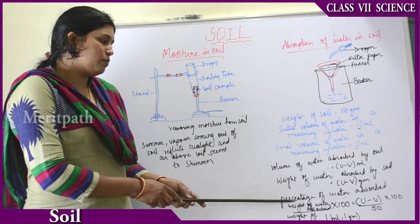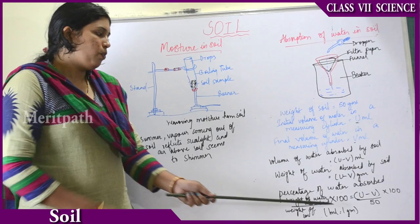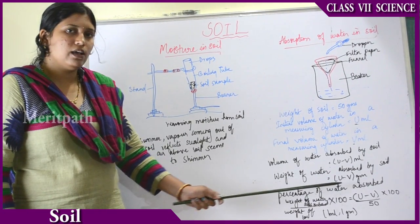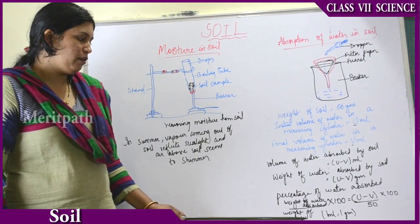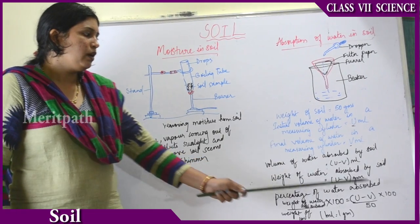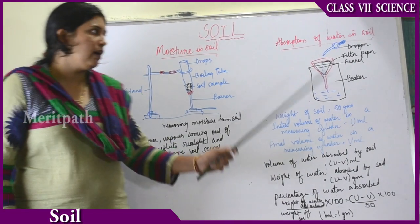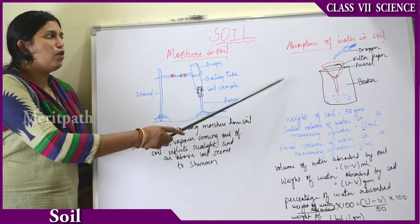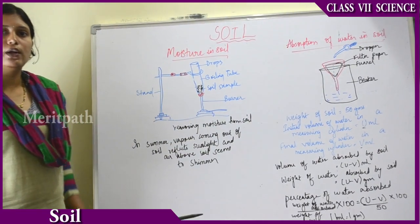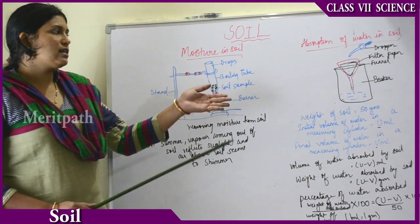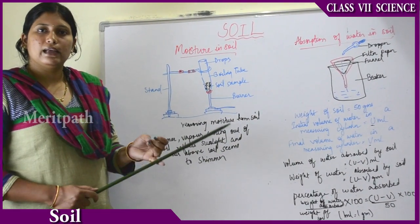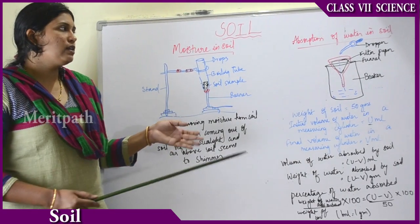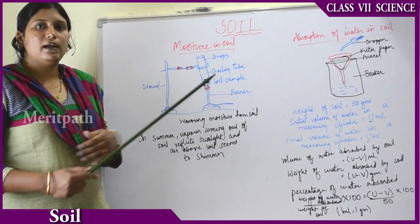The percentage of water absorbed is the weight of water absorbed — U minus V — divided by the weight of your soil (50 grams), multiplied by 100. That gives us the absorption percentage. This can be done for different types of soil: clay soil, sandy soil, and loamy soil — each will give a separate absorption amount.